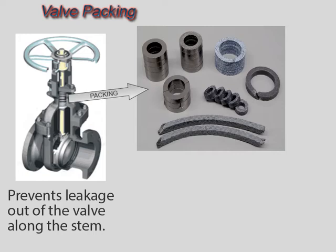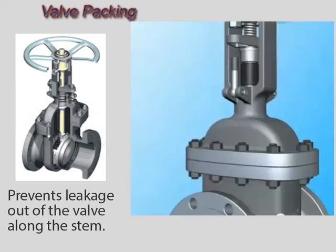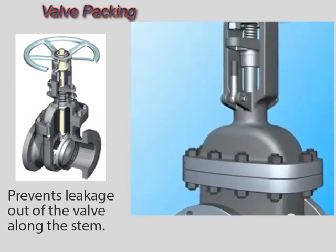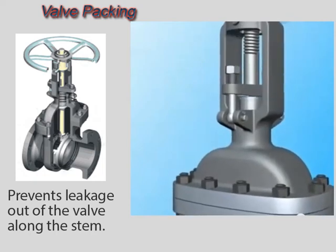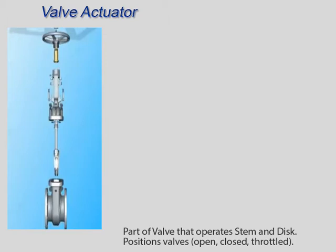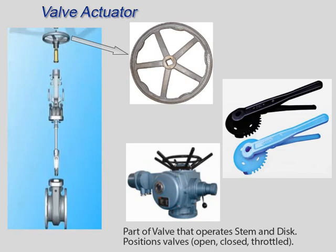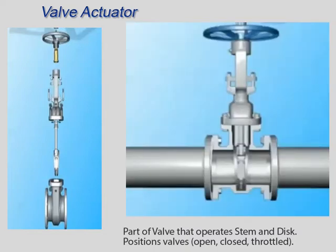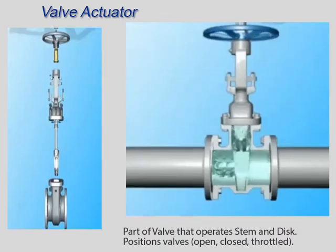Valve packing must be properly compressed to prevent fluid loss and damage to the valve's stem. If a valve's packing is too loose, the valve will leak, which is a safety hazard. If the packing is too tight, it will impair the movement of, and possibly damage, the stem. The actuator is the part of the valve that operates the stem and disc assembly. There are many actuator designs available — it may be as simple as a manual handwheel or as complex as a motor. The purpose of actuators is to position valves open, closed, or throttled. The positioning of the valves can be done manually or automatically, and the operation can be performed locally or remotely.